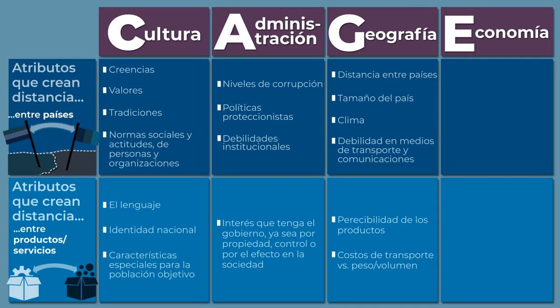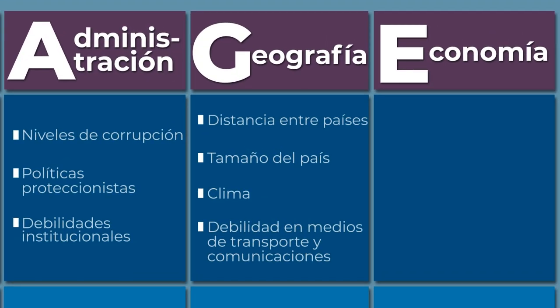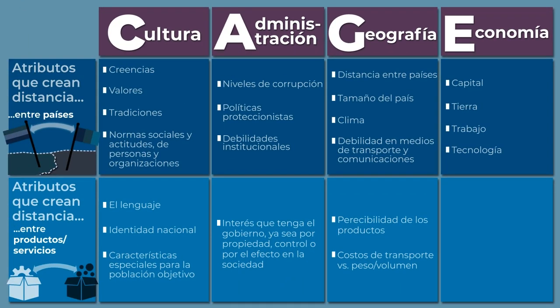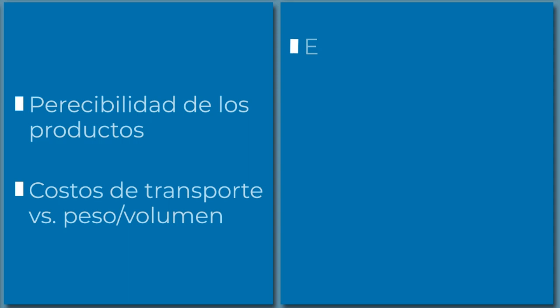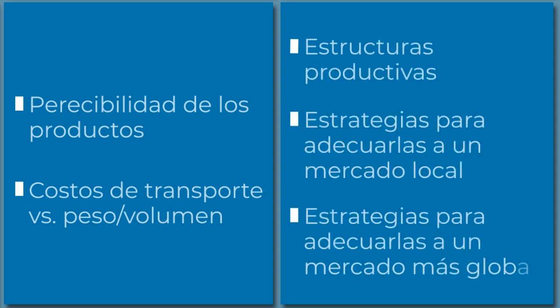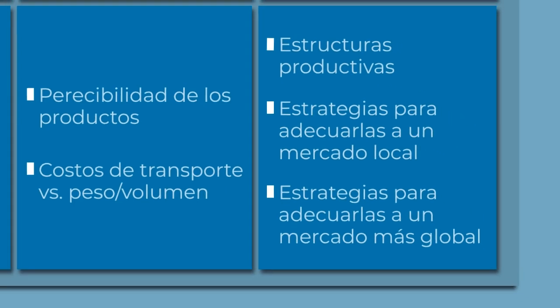Dentro de la columna de economía, identificaremos en el análisis de país temas como los factores productivos: capital, tierra, trabajo y tecnología. Su combinación permitirá reconocer si a un país se le facilita o se le dificulta internacionalizarse. En cuanto a la industria, debemos mirar sus estructuras productivas, las estrategias para adecuarlas a un mercado local o las estrategias para adecuarlas a un mercado global.